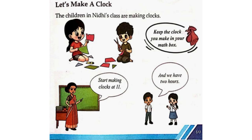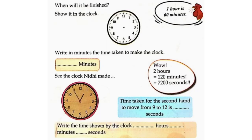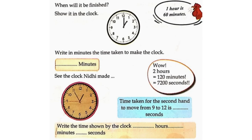Let's make a clock. The children in Niti's class are making clocks. Keep the clock you make in your math box. Start making clocks at 11, and we have two hours. When will it be finished? One hour is 60 minutes, so the answer is 1 o'clock. Write in minutes the time taken: 120 minutes. Two hours is equal to 120 minutes.